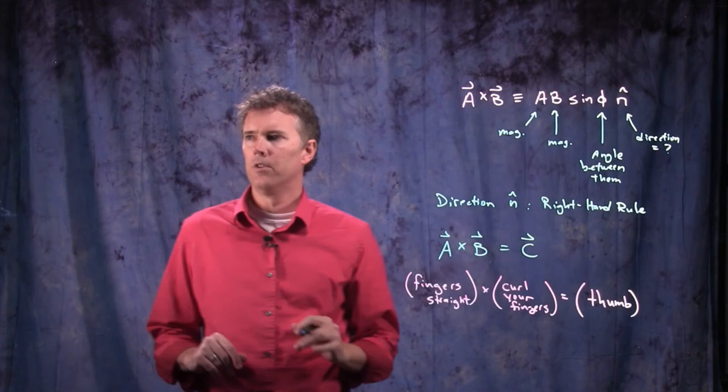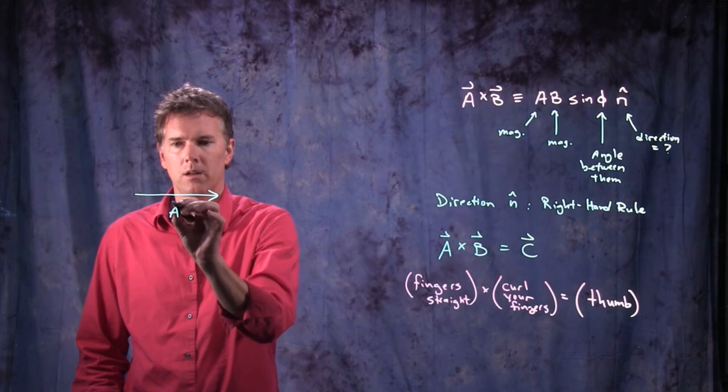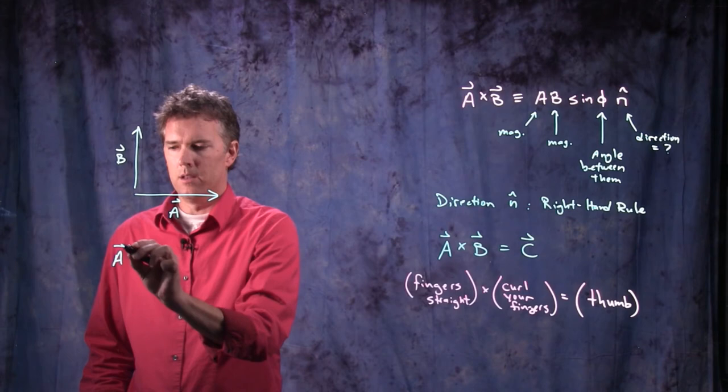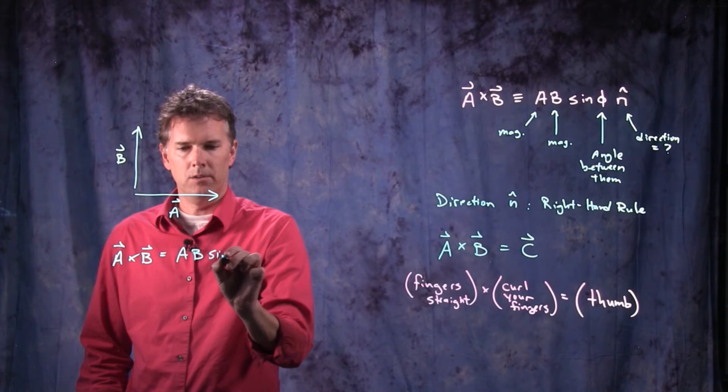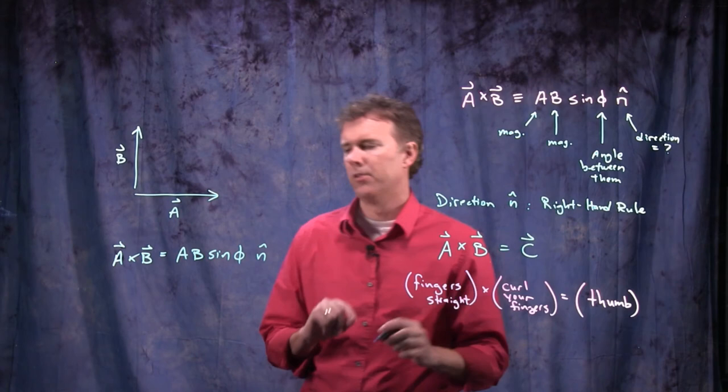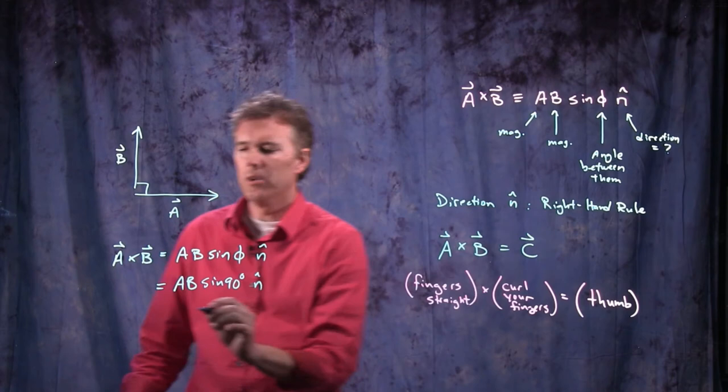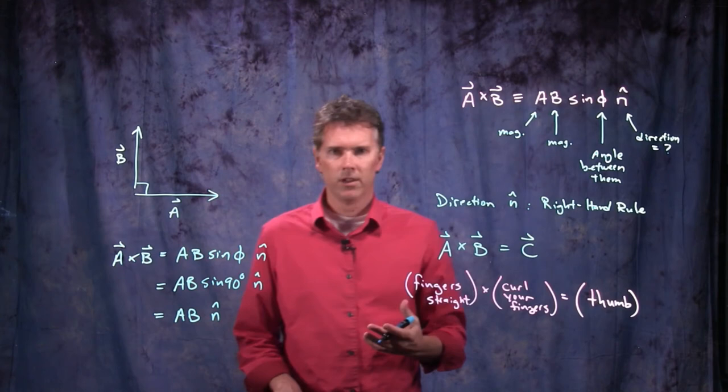Okay, if we just have two vectors, and I'm going to change the order slightly. Let's say we have vector A pointing to the right. And we have vector B pointing up. What is A cross B? A cross B is going to be magnitude of A, magnitude of B times the sine of the angle between them with a particular direction. But the angle between these two is a right angle. And so we get sine of 90 degrees. And so we just get AB n hat. Sine of 90 degrees is of course 1.